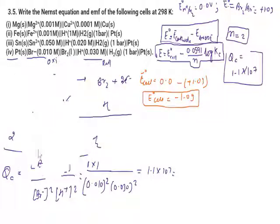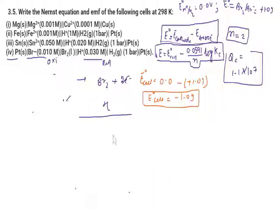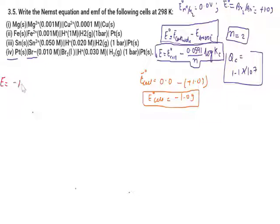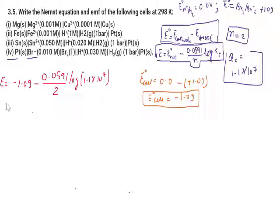Applying the Nernst equation: E = −1.09 − (0.0591/2) × log(1.1 × 10⁷). Calculating this gives E = −1.29 V. This is the EMF for part 4 using the Nernst equation. Please don't forget to subscribe and share the channel.